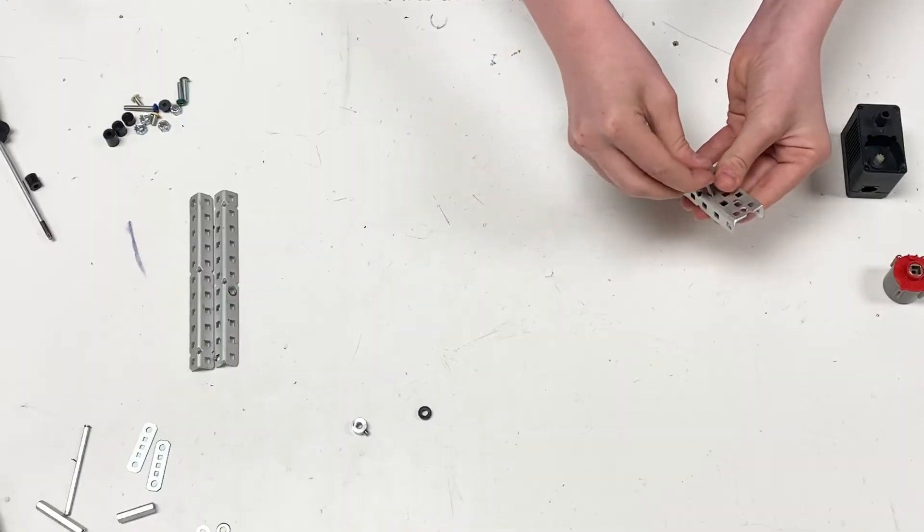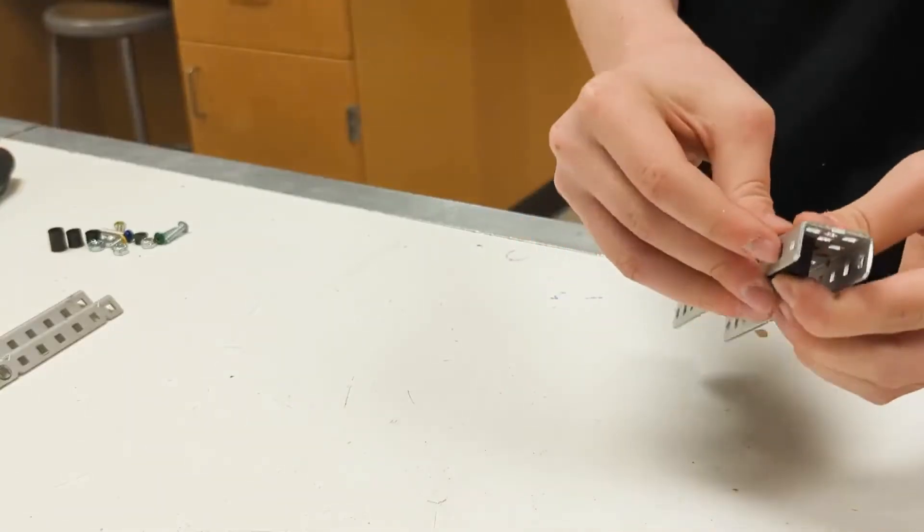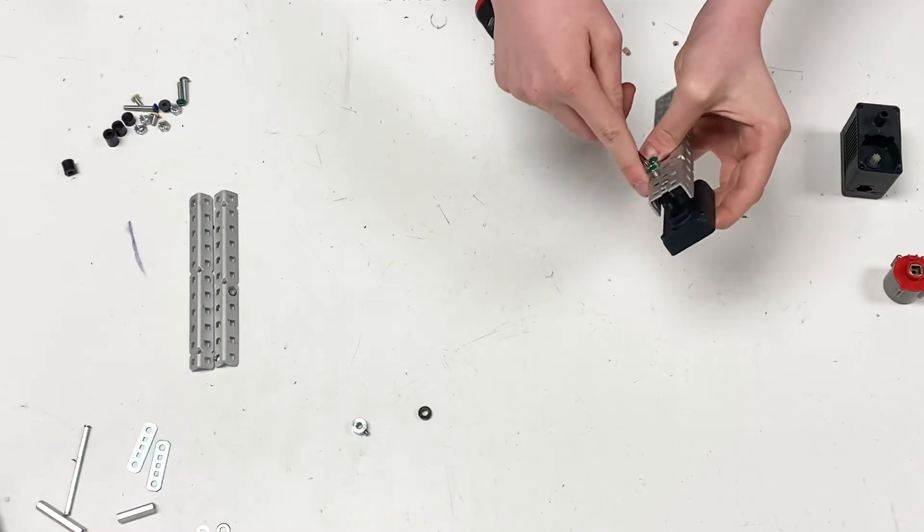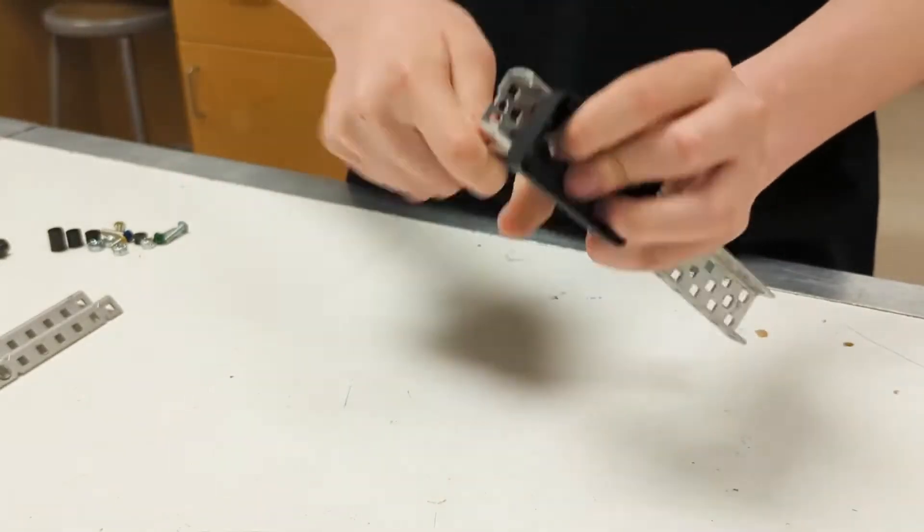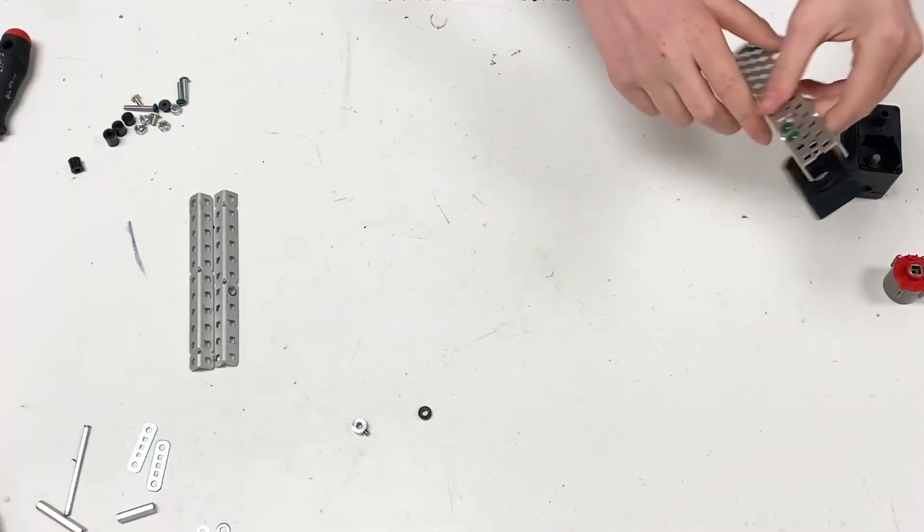You're going to take these two 3/4-inch screws, a motor cap, and screw them in nicely. Once this is done we're going to take this piece and put it to the side.